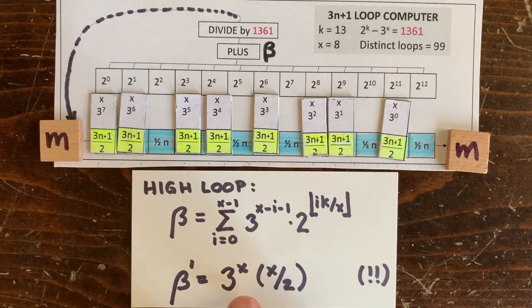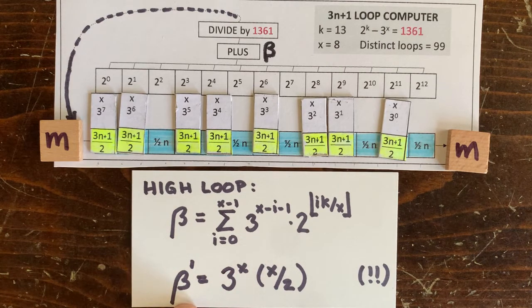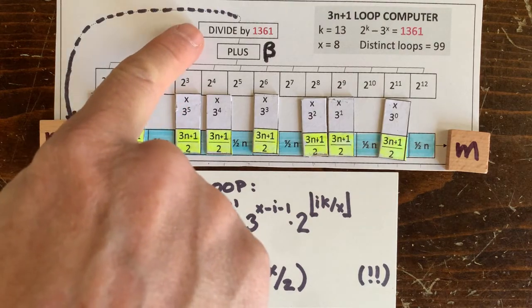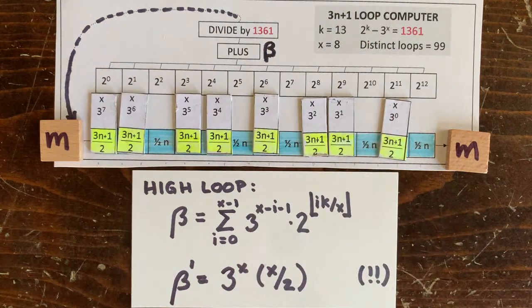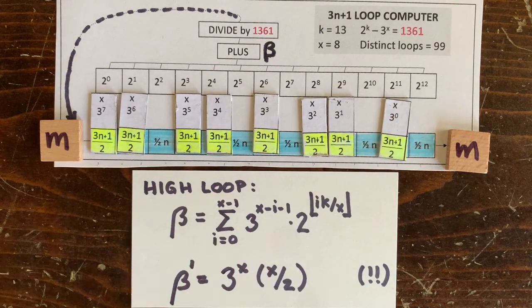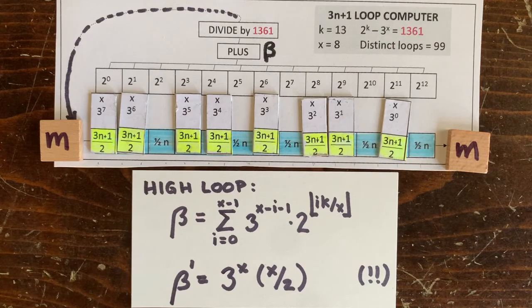We can solve for when beta prime exceeds a billion billion. But unfortunately, we've also got this annoying denominator to contend with. If it's large, that drives m down. And if it's small, it drives m up. And this denominator, as we've seen, is completely chaotic. So let's just go through all the loop lengths, brute force, one at a time.